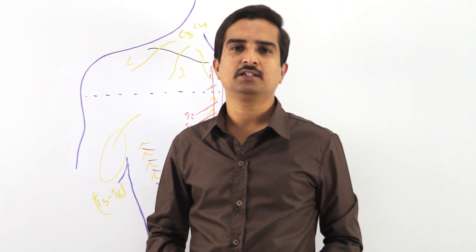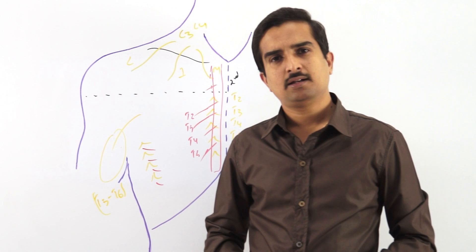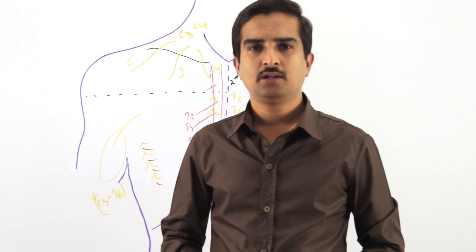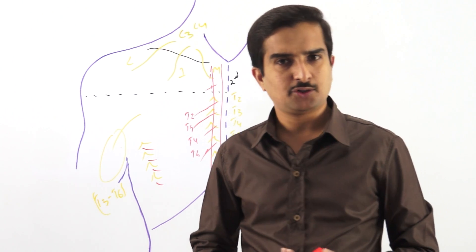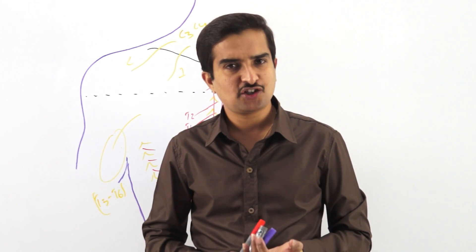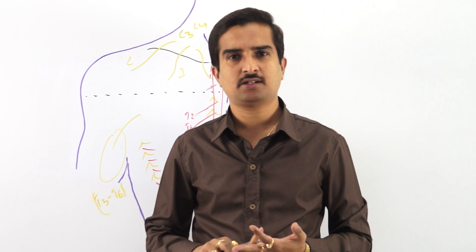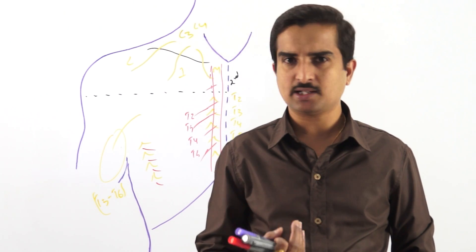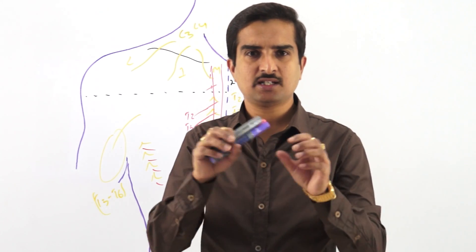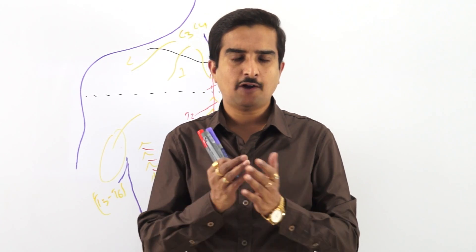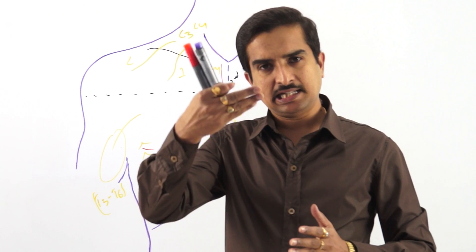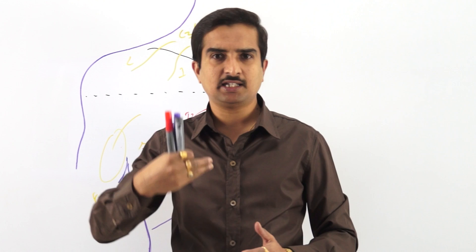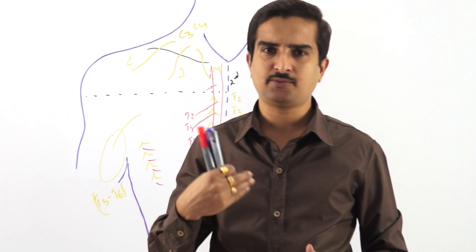These are the cutaneous vessels seen in the superficial fascia of the pectoral region. To review the contents of the superficial fascia: first, there is a moderate amount of fat. After incising the skin, you can see the superficial fascia with a moderate amount of fat. After removing the fat, you can clearly see the superficial fascia containing the cutaneous nerves as well as cutaneous vessels.